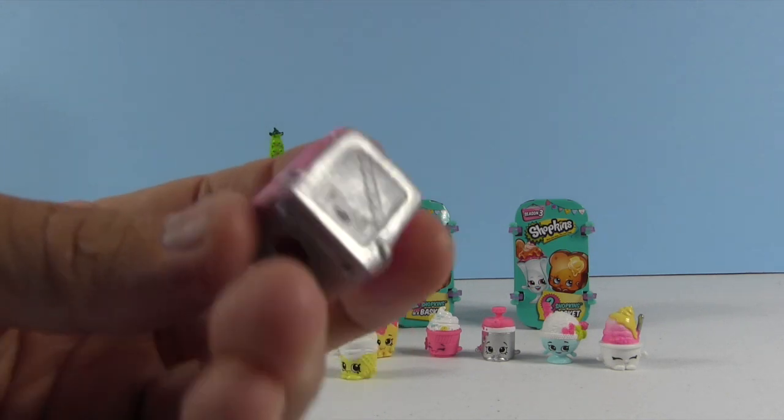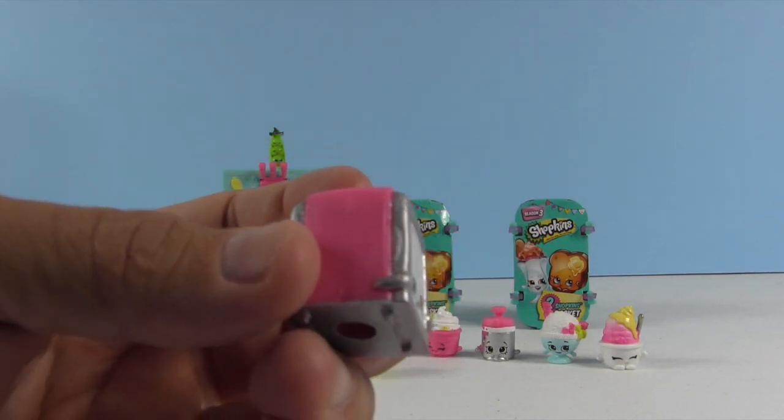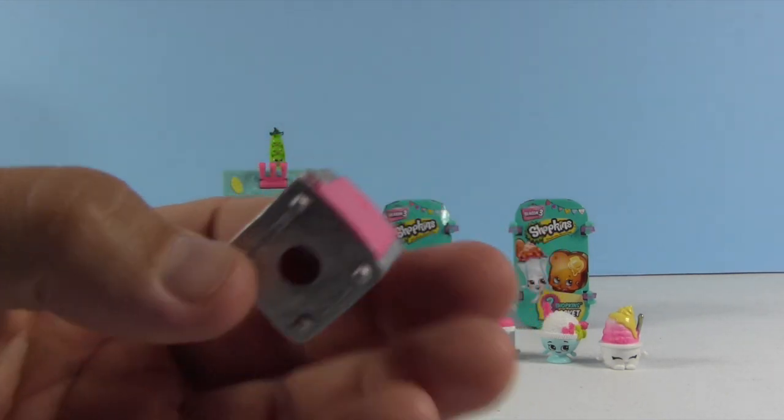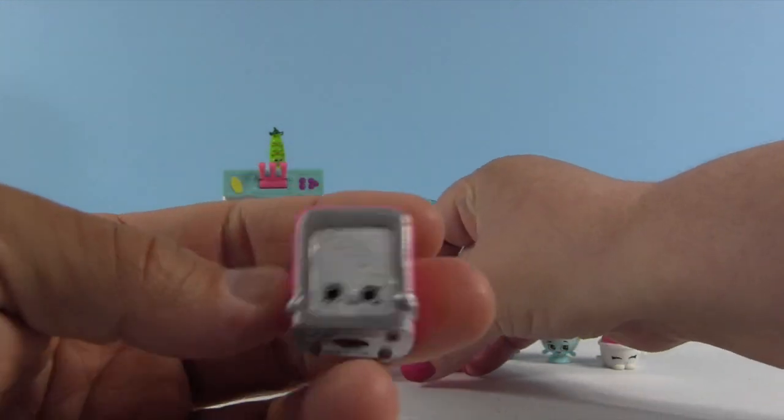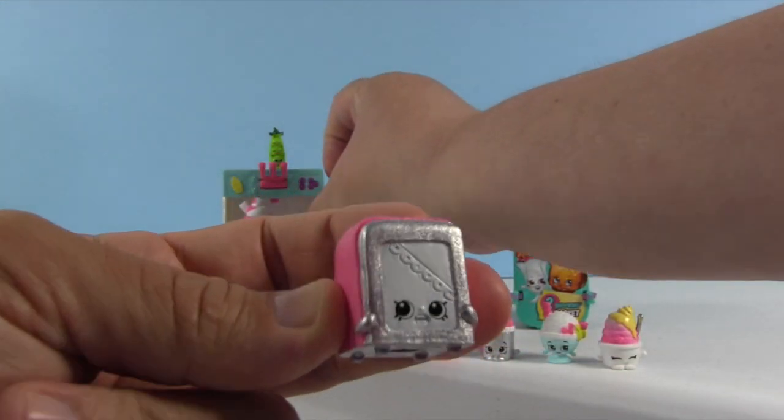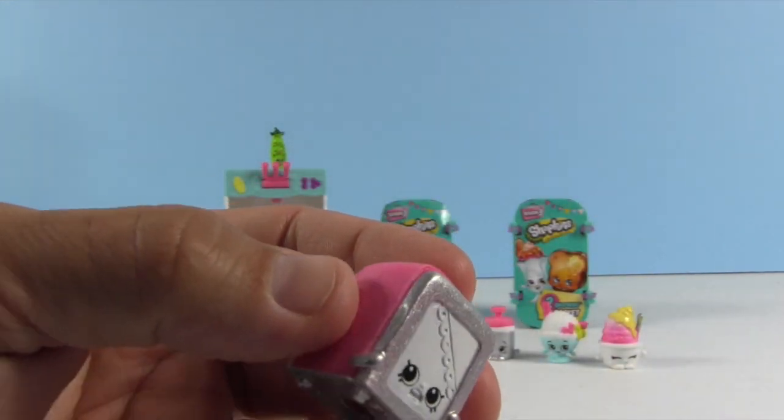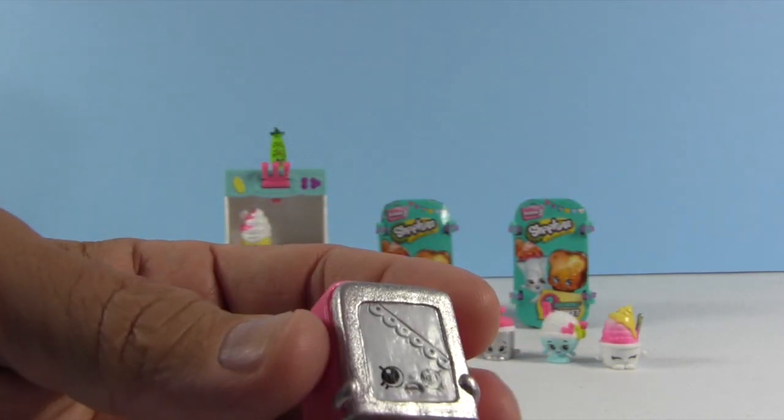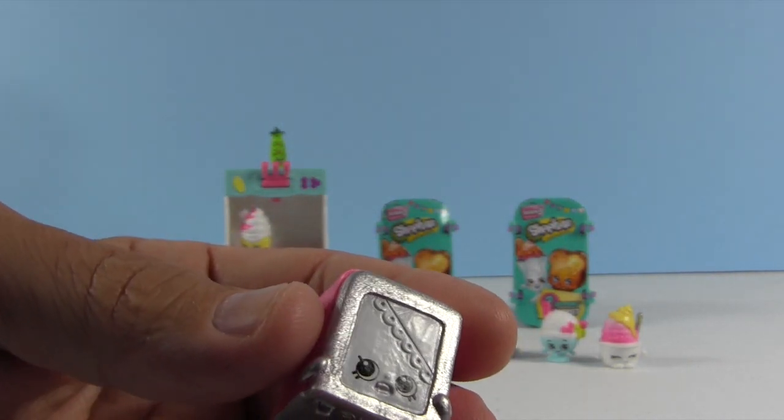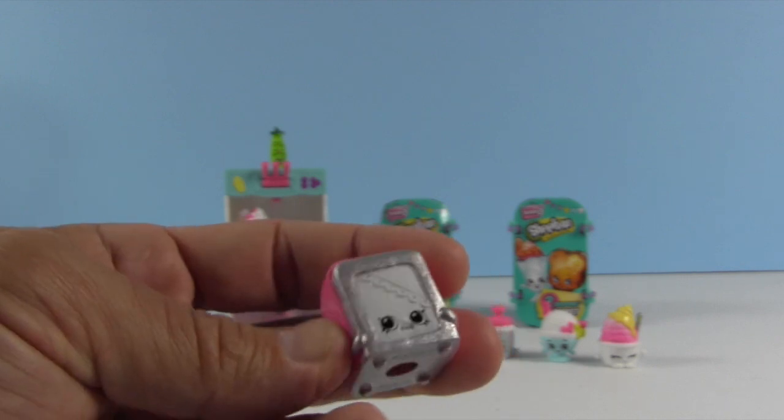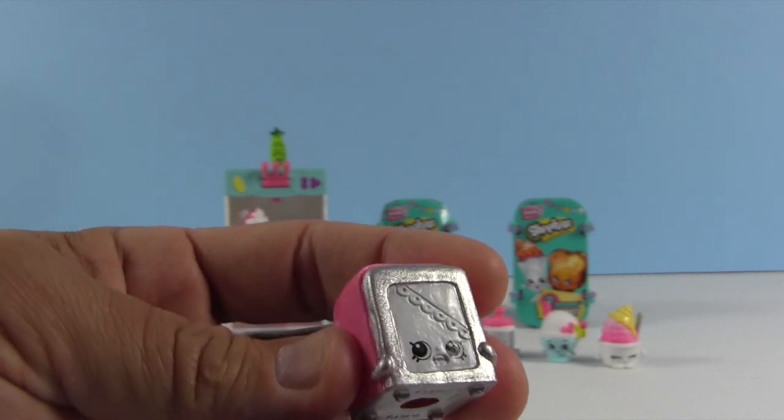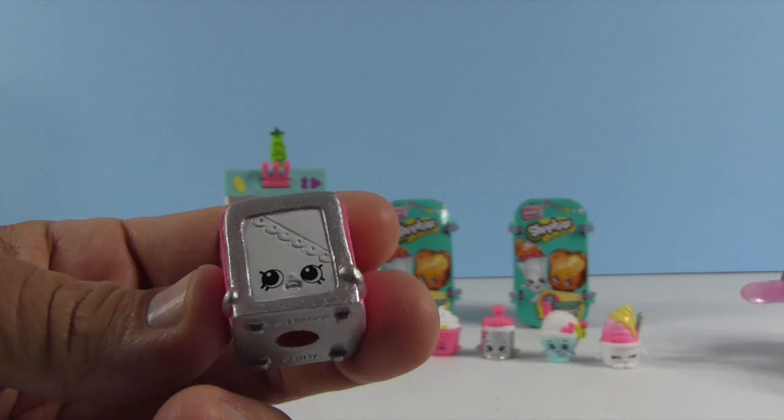And then we have a really big shopkin. It's Servietta, which is the napkin dispenser, which you need with all of the ice cream. And based on the story on the back, it says these two are messy, Servietta's going to clean it up. But don't stress over the mess, Servietta, which means Servietta's stressed out about it.